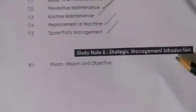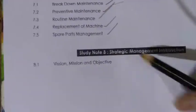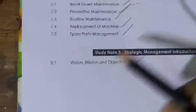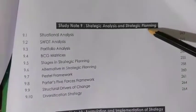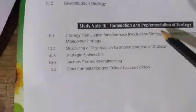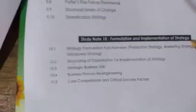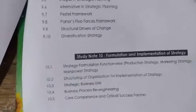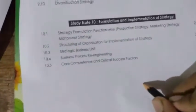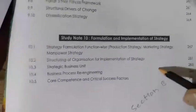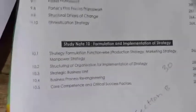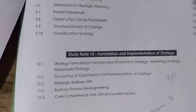Section B is Strategic Management. It covers the Introduction of Strategic Management, Vision, Mission and Objective, Strategic Analysis and Strategic Planning, and the formulation and implementation of strategy. Strategic Management is a theory area, comprising 30% of the exam questions.